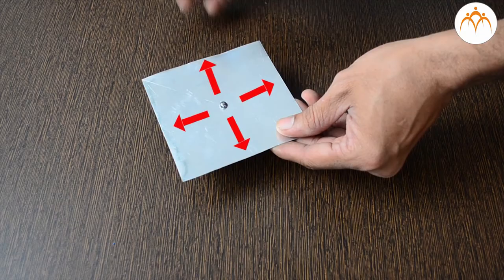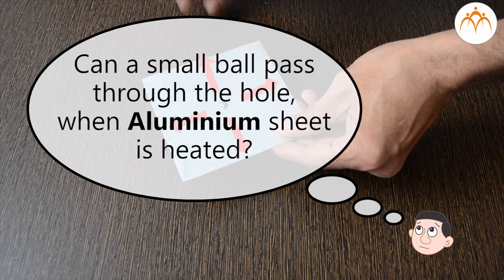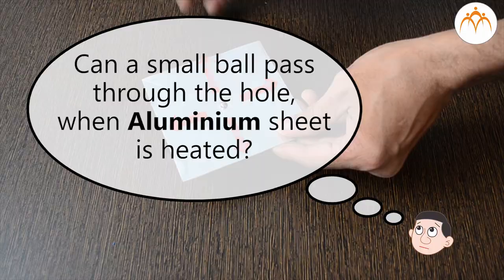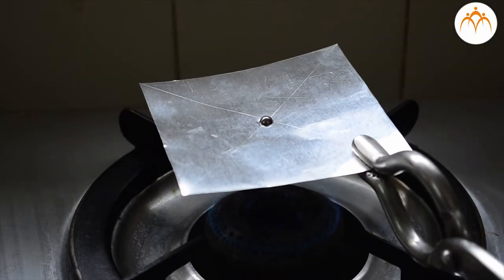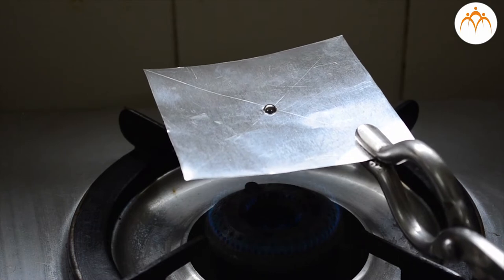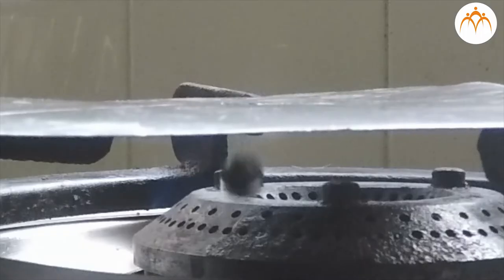We know that objects expand in all directions. Will this small steel ball pass through the hole when aluminum sheet is heated? Yes, it will expand in all directions. As I heat it, aluminum expands. The hole becomes large enough for ball to pass through.